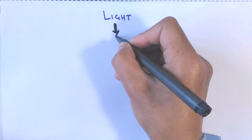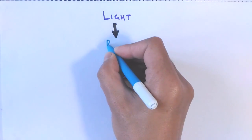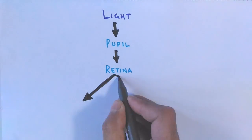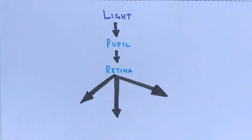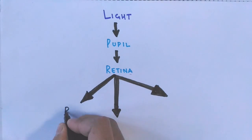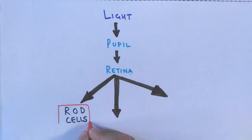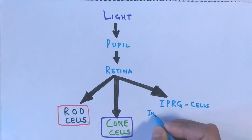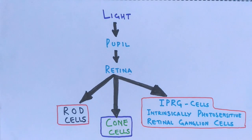During the daytime or under artificial light conditions, light strikes our eyes and goes through the pupil towards the retina. The retina has three different types of photosensitive cells: rod cells, cone cells, and intrinsically photosensitive retinal ganglion cells (ipRGCs). These photosensitive cells are able to phototransduce and carry out their specific functions.